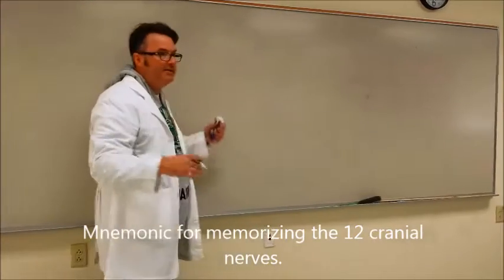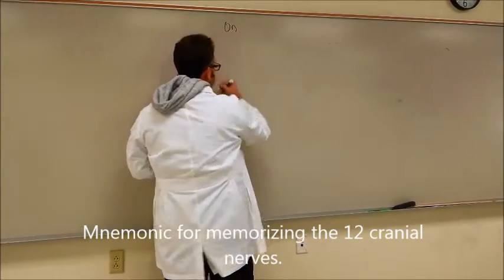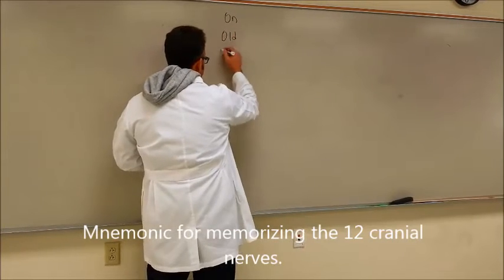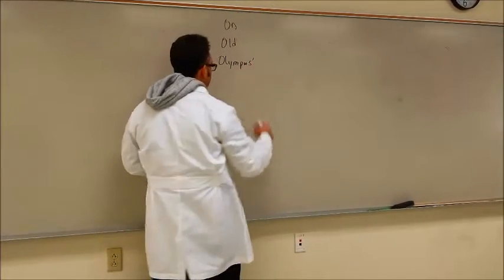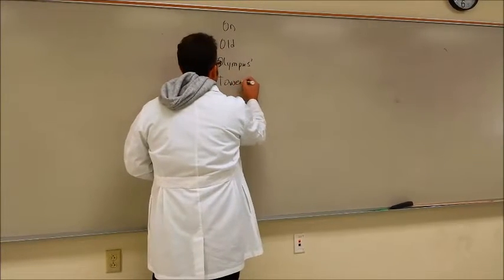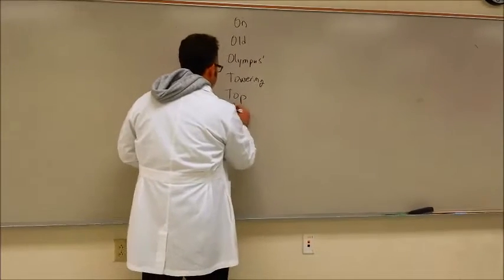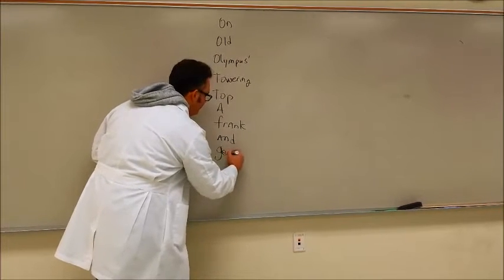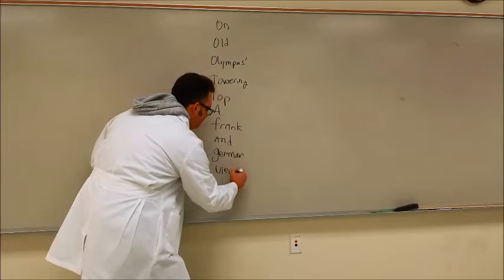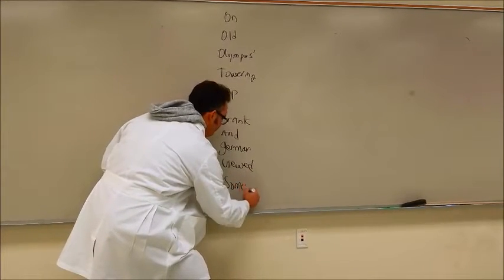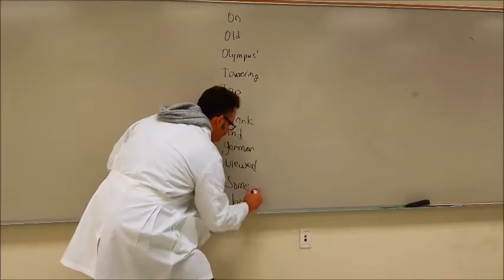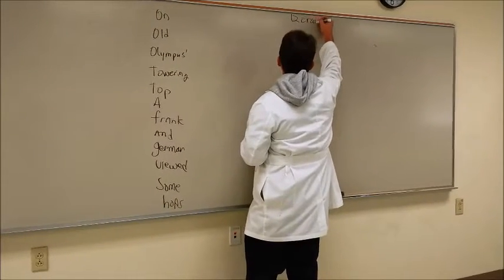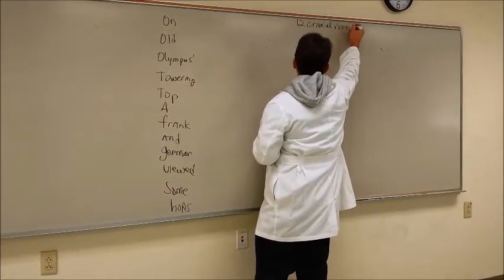Here's how I memorized it years ago. I memorized this using this memory technique, this mnemonic: On Old Olympus's towering top, a Frank and German viewed some hops. Hops are what they make beer out of. So I'm going to go over the 12 cranial nerves.